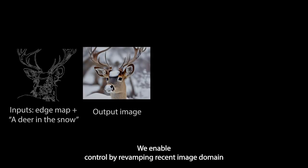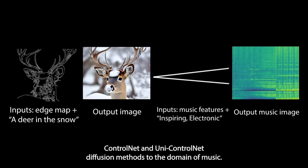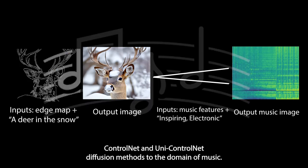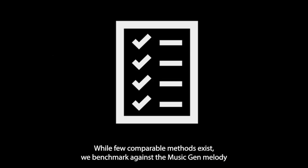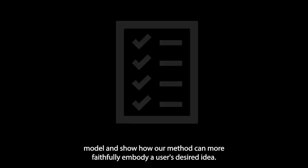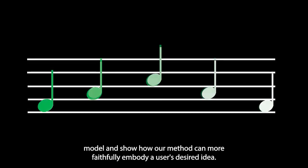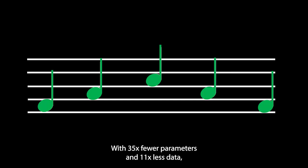We enable control by revamping recent image domain ControlNet and unique ControlNet diffusion methods to the domain of music. While few comparable methods exist, we benchmark against the MusicGen melody model and show how our method can more faithfully embody a user's desired idea with 35 times fewer parameters and 11 times less data.